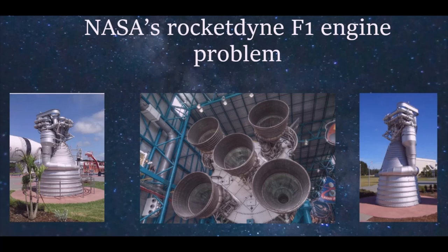NASA placed a small bomb in the center of the combustion chamber. As soon as the engine fired up, the bomb would burst, which would replicate the vibrations while the engine was in flight. The flame inside the engine became completely unstable, but the new design of the injector plate resolved the problem. NASA performed many tests to make sure that this engine is safe for the astronauts. And that's a very interesting way that they tested the engine.